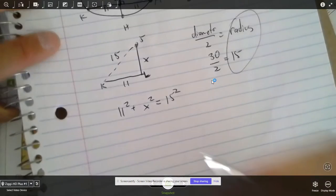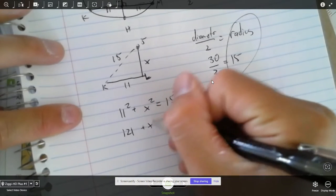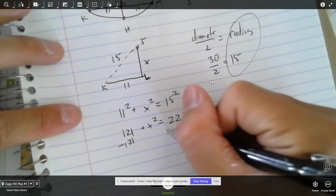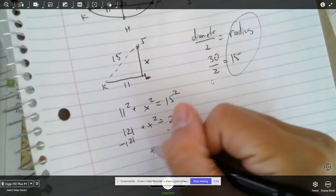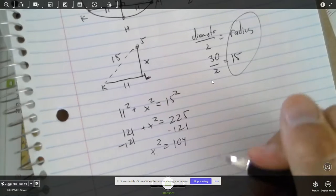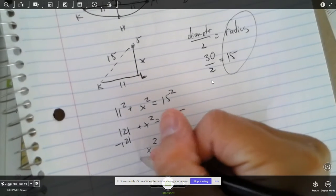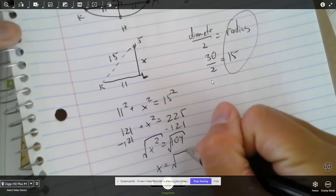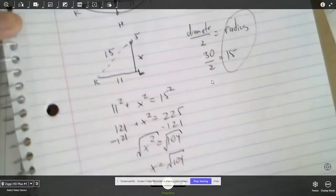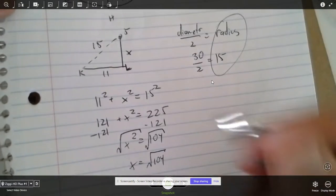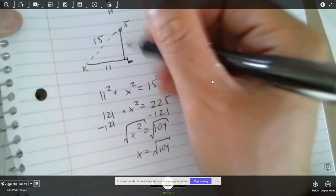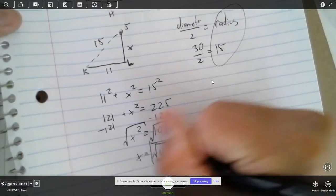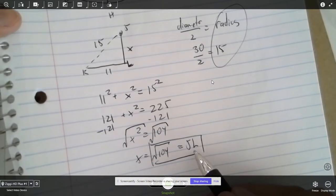If you know the Pythagorean Theorem, all it is is A squared plus B squared equals C squared. So it's 11 squared plus X squared equals 15 squared. Let's work that out. 11 squared is 121 plus X squared equals 225. Let's subtract 121 from both sides. You should get X squared is equal to 104. And then you just take the square root of that. And you get X is equal to the square root of 104. I'm not going to simplify. And that is the length of J to L. So the square root of 104 is J to L.